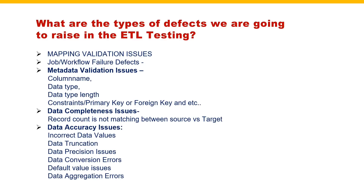Next is data precision issues. For example, what is precision? Let's consider petrol price - when you go to a petrol pump, you are going to see even paisas. For example, 98.50 or 98.60. While loading, if you are loading directly 98 and removing the decimal part like .65, then the calculation is going to be wrong. So data precision issues are also something we have to consider.